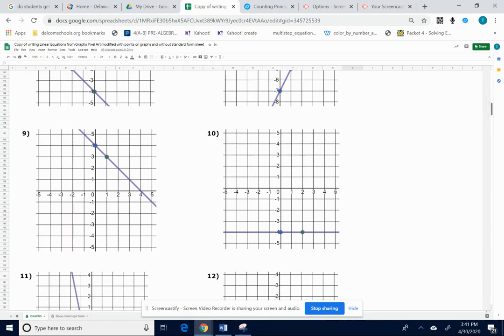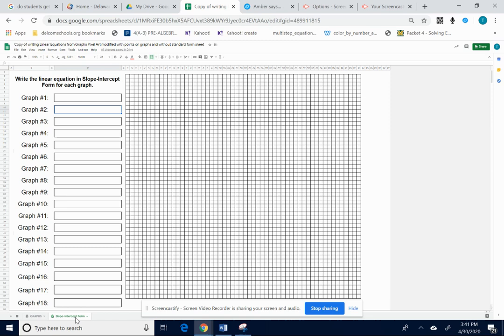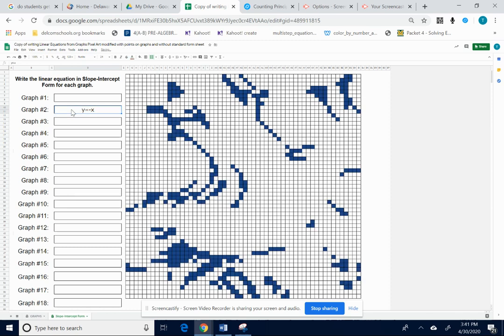I need to go down and click the slope-intercept form page on the bottom left-hand side. I'm going to find problem 2, graph 2. And I'm going to type in y equals negative x. Don't put any spaces at all in these. No spaces. I'm going to click enter.